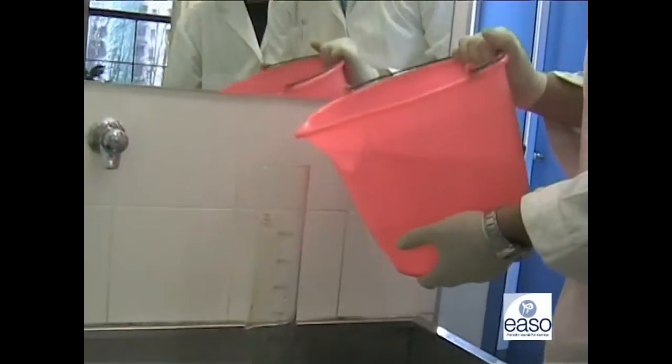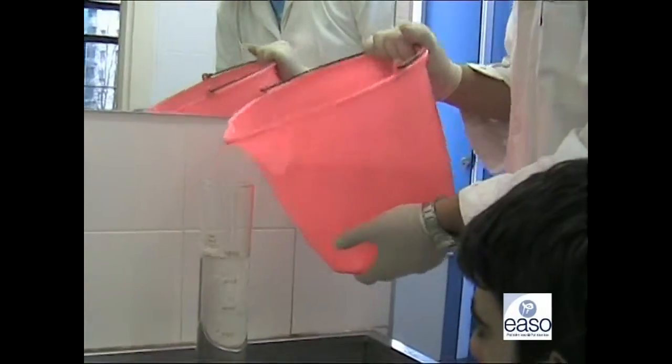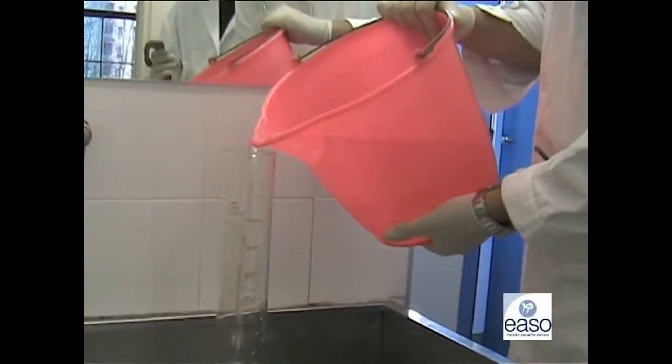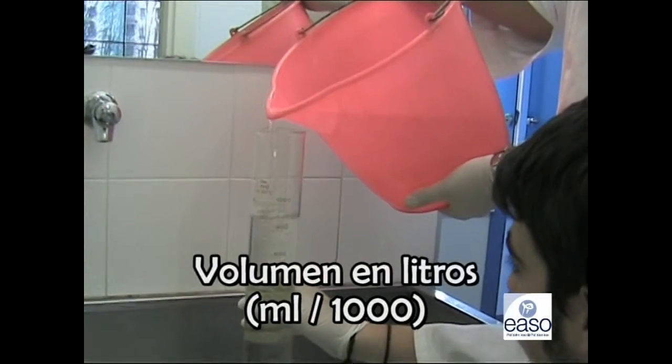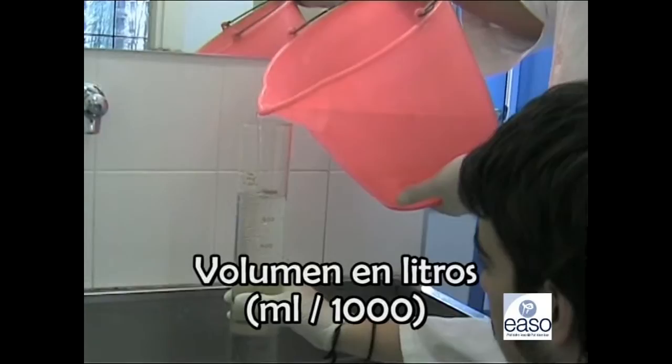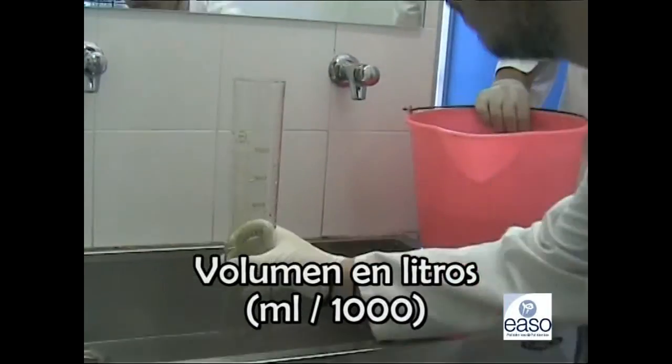El agua recogida en el cubo la traspasaremos a nuestra jarra medidora, sumando los volúmenes hasta agotar el agua del cubo. De esta manera conoceremos el volumen vertido. Este volumen lo expresaremos en litros, para lo cual dividiremos la cantidad de mililitros o centímetros cúbicos entre mil.